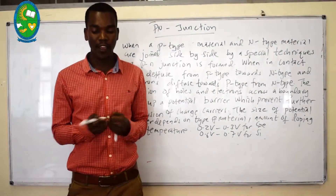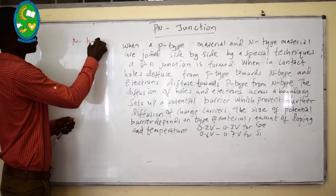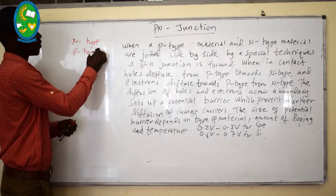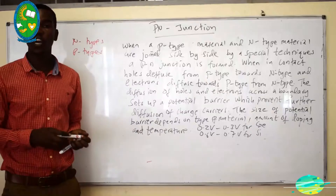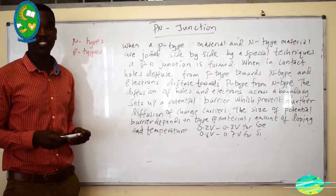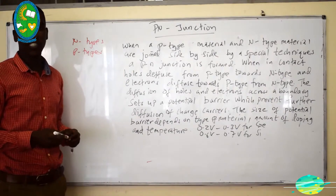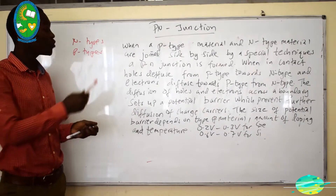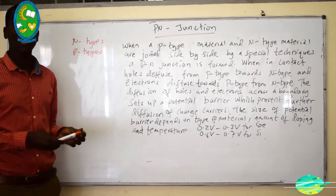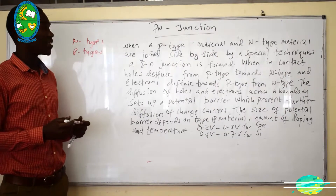As we saw earlier, P-type and N-type materials have an imbalance of charge carriers. N-type material has an excess of electrons, while P-type material has an excess of holes, which are positive charge carriers.